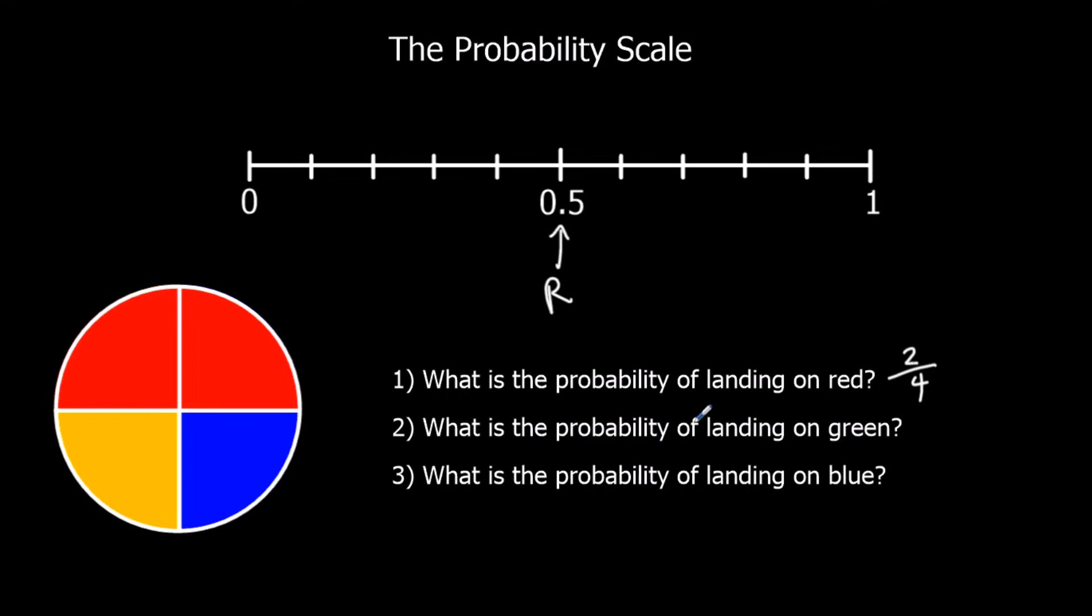What's the probability of getting a green? There are no greens, so none out of 4. Green goes over here, 0 chance, no chance of it happening.